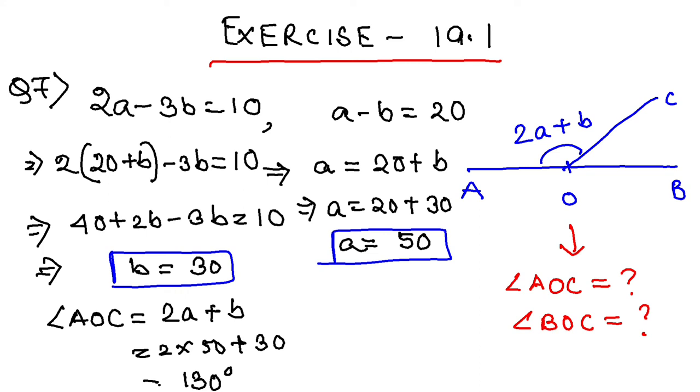So angle AOC is 130 degrees. Looking at the figure, AOC plus BOC equals 180 degrees—angles on a straight line. I'll write: angle AOC plus angle BOC equals 180 degrees, angles on a straight line.